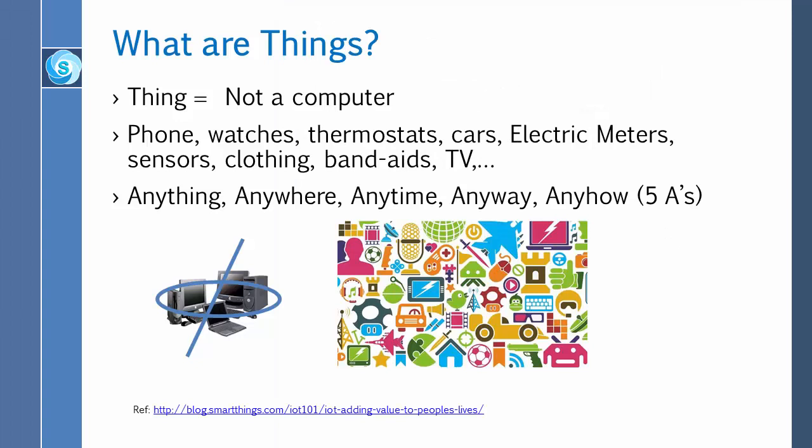So what are things? Basically the definition of a thing is anything which is not a computer — this table, the pen, the phone, light — these are all not computers. Up until a few years ago, all computers were on the internet; every computer had a network. So now we have covered all the computers. Where do we make money from next? Everything non-computing is a thing. We are going to connect everything, electrical and non-electrical.